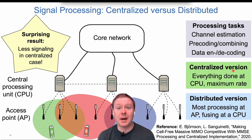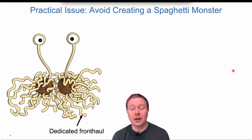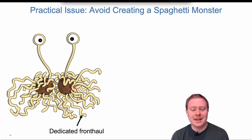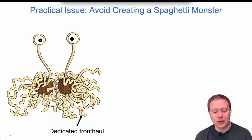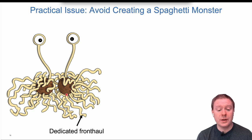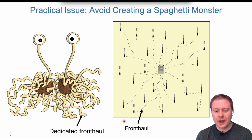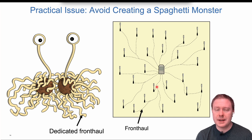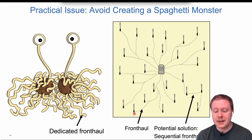There are practical issues that need to be overcome. One is avoiding a 'spaghetti monster': if every access point has its own dedicated cable to the CPU, and you have 100 access points connected to the same CPU, you'll have a massive tangle of cables — a nightmare to deploy in a city, requiring digging up streets everywhere. The alternative is to use a sequential fronthaul instead of dedicated individual cables.